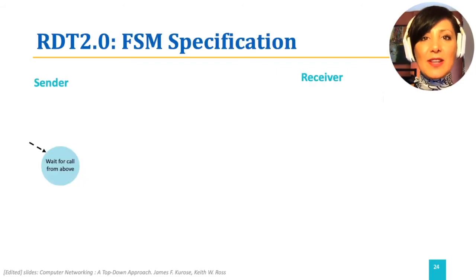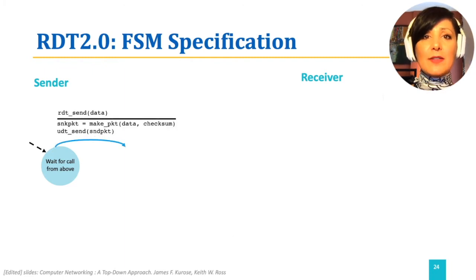Let's take a look at the FSM for RDT 2.0. On the sending side, sender accepts data from the upper layer using RDTSend, makes the packet for the data, and sends it using UDTSend, and transitions to this state waiting for the Acknowledgement or Negative Acknowledgement.